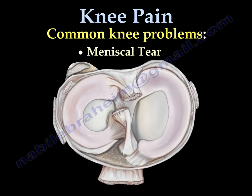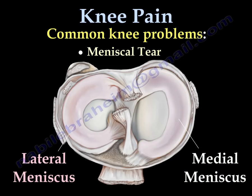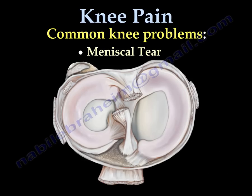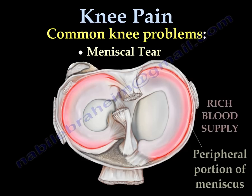Meniscal Tear: this is the medial meniscus and this is the lateral meniscus. The inner part of the meniscus lacks blood supply and cannot heal by itself. The outer area of the meniscus is rich in blood supply, so if there is a peripheral tear in this area and it is sutured, it can heal.